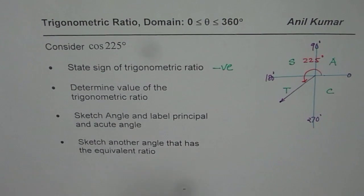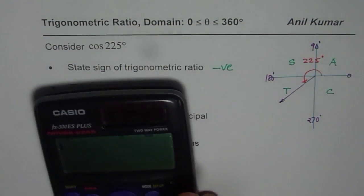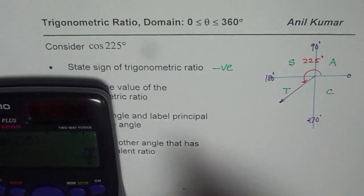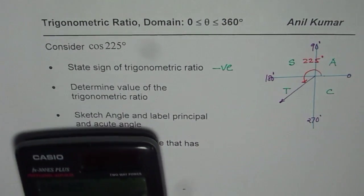Then, we have determined value of trigonometric ratio. For this, we can use our calculator. So, we will use calculator and say, cos of 225 is equal to, so we get minus square root 2 over 2. So, that could be the value which we could write.